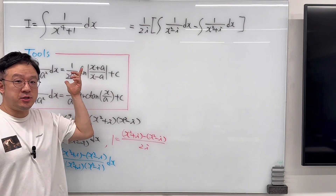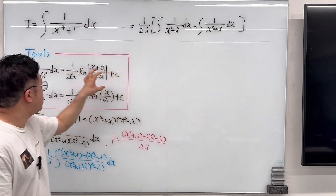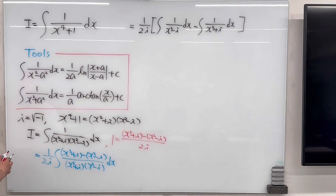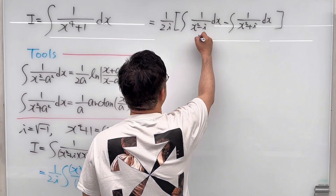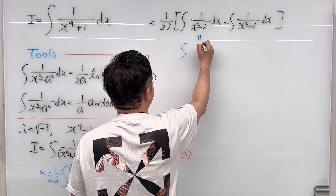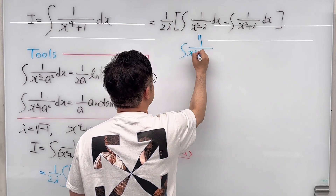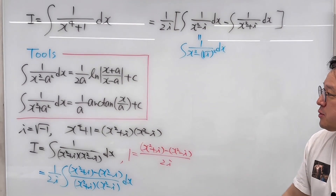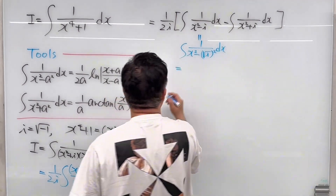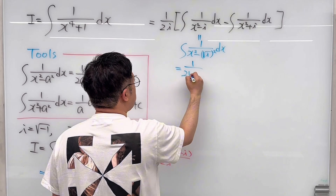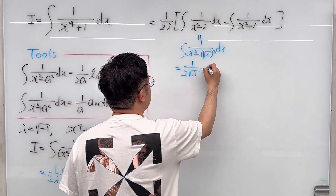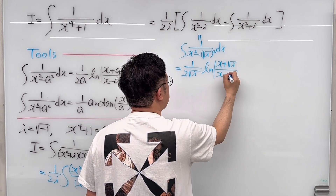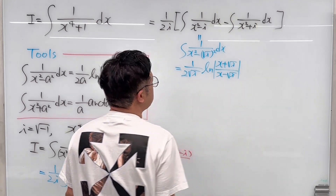Now we apply our two tools. The first integral is related to the first tool. The first integral, 1 over (x² − i) dx, is the same as 1 over x² minus (√i)², so using that tool it equals 1 over 2√i times ln of (x + √i) over (x − √i), plus C.